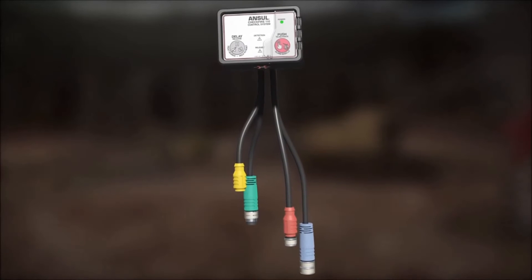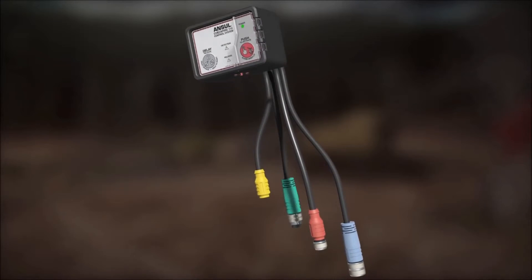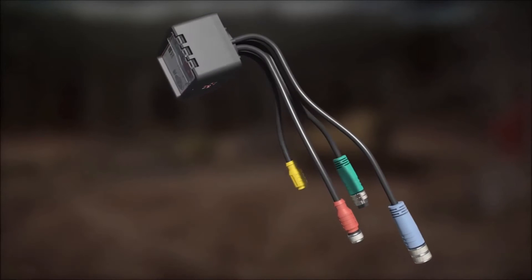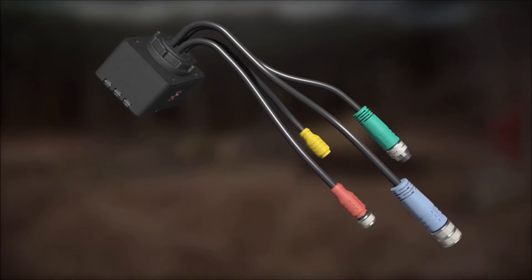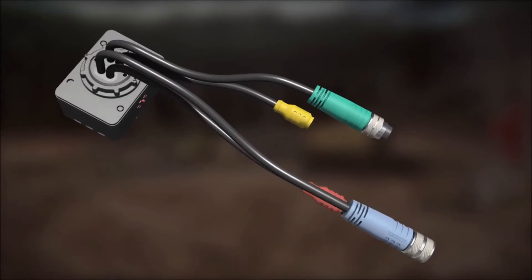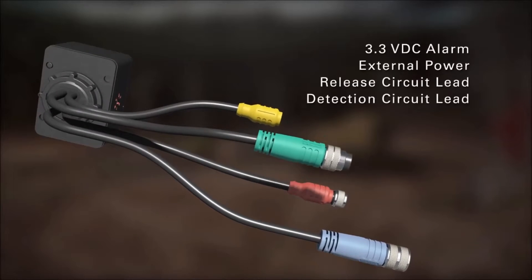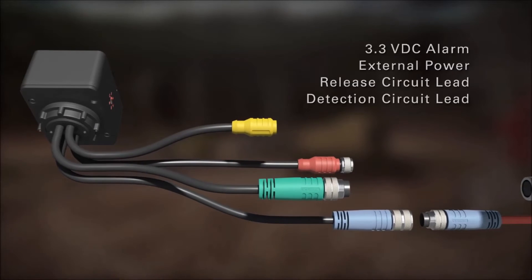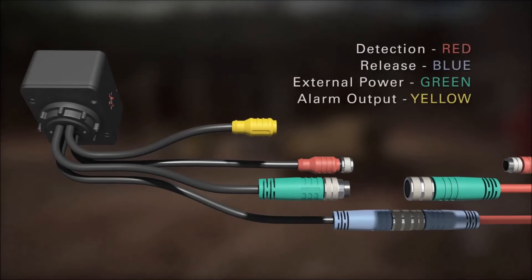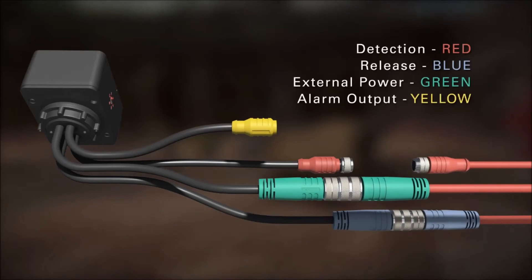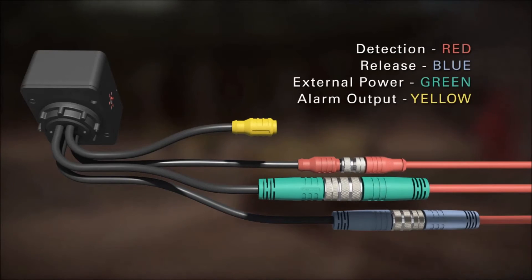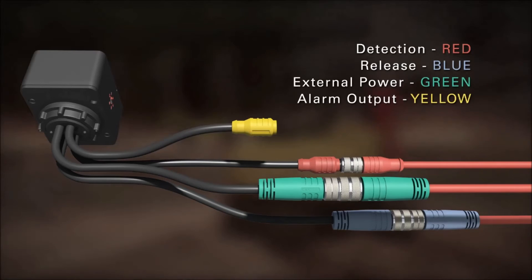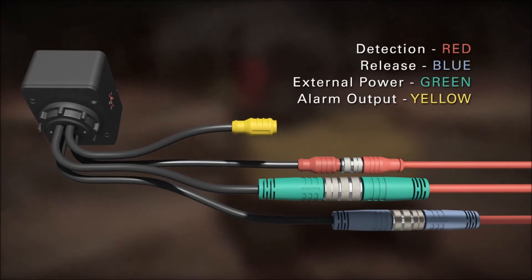The CheckFire 110 system utilizes IP67 circular threaded connectors on all cables and components. These dust and watertight cable harness connections help protect the detection and actuation system from rigorous operating and environmental conditions. All cabling is plug and play with color-coded over-molded connectors and corresponding colors for ease of installation and replacement in the event of damaged cables.